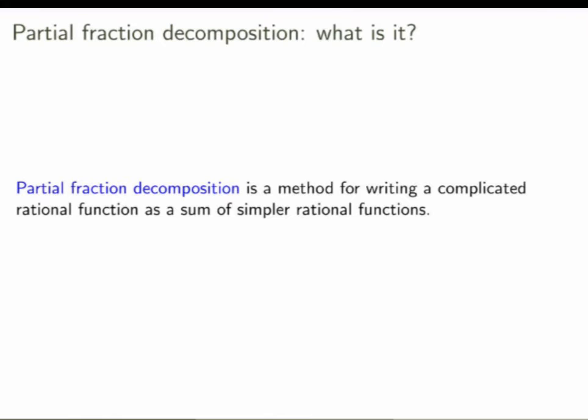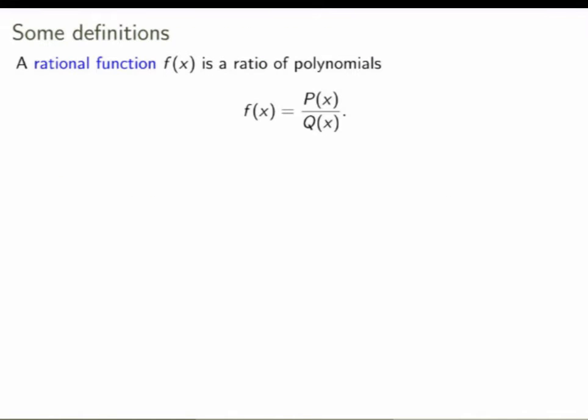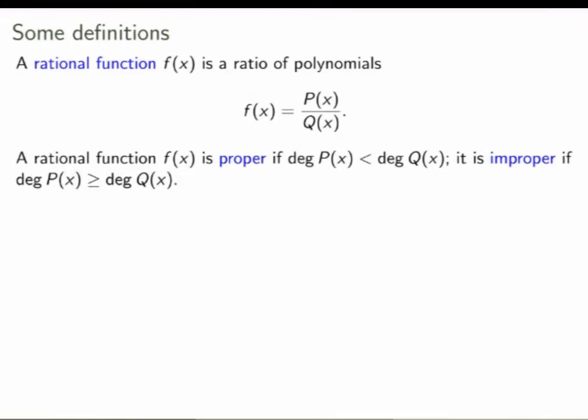Before we define what the method is, let me first define a few terms to make sure we're on the same page. A rational function f is a ratio of polynomials. Now we're going to distinguish between two types of rational functions. We say a rational function is proper if the degree of the numerator is less than the degree of the denominator, and improper otherwise — if the degree of the polynomial in the numerator is greater or equal than the degree of the denominator.